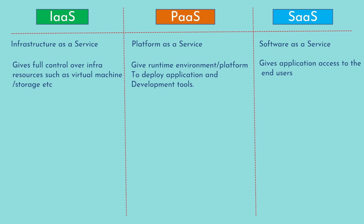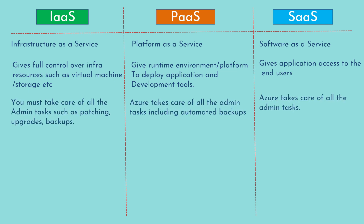In SaaS, they provide you an application that you can consume directly as an end user. These software applications are hosted on cloud and run by the cloud provider — you just use them as the user. In IaaS, you must take care of all administrative tasks such as server patching, upgrades, and backups. Patching is nothing but making sure all your software and operating system packages are up to date and have all the fixes for security and vulnerabilities.